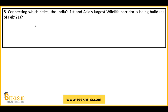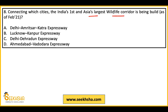Eighth question: India's first and Asia's largest wildlife corridor is being built — on which expressway? Options: Delhi-Amritsar-Katra Expressway, Lucknow-Kanpur Expressway, Delhi-Dehradun Expressway, or Ahmedabad-Vadodara Expressway. When highways pass through deep jungles it creates problems for animals, so wildlife corridors are created so that animals and nature are unaffected. The answer is the Delhi-Dehradun Expressway — India's first and Asia's biggest wildlife corridor.